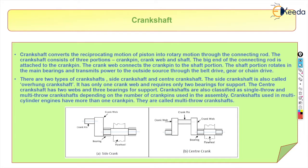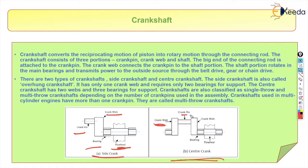Crankshafts used in multi-cylinder engines have more than one crank pin and are called multi-throw crankshafts. In the diagram, the side crank has a crank pin bearing, crank web, and flywheel connected. The center crank has a crank web, crank pin, crank web, flywheel, and bearings.